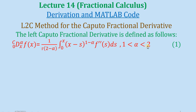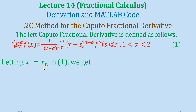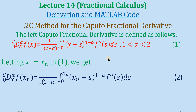You can see equation number 1. This is what we call the left Caputo fractional derivative of order alpha, where alpha lies between 1 and 2. In equation 1, replace x by x_n, and if we do so, we will have equation 2.